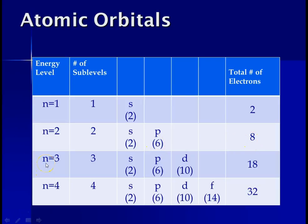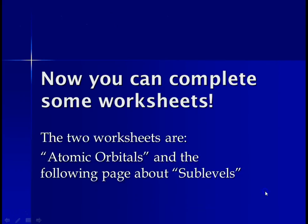At the third principal energy level, there are three sublevels, the S, the P, and the D. Two, six, ten, equals eighteen. And finally, at the fourth principal energy level, there are four sublevels, S, P, D, and F, with two, six, ten, and fourteen, or thirty-two total electrons.